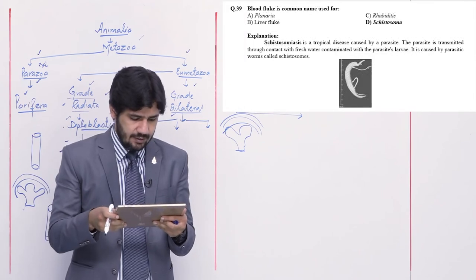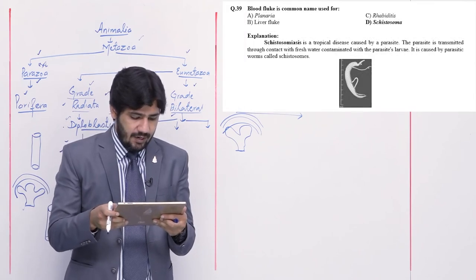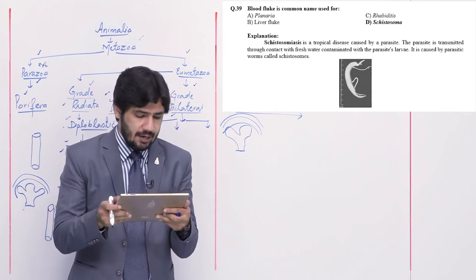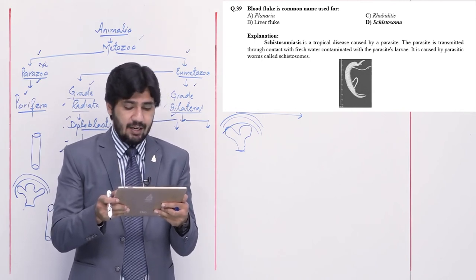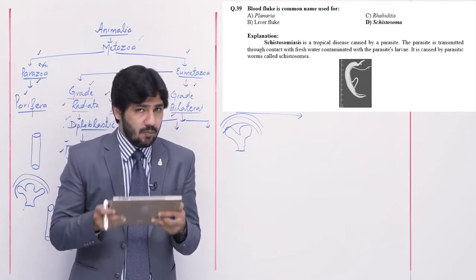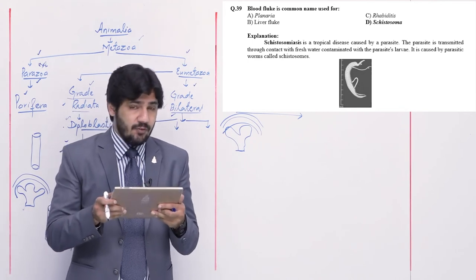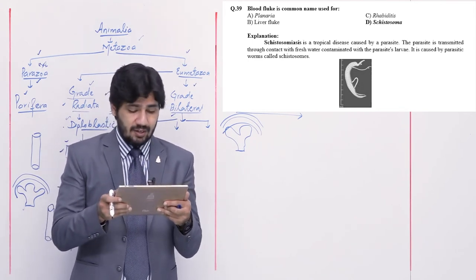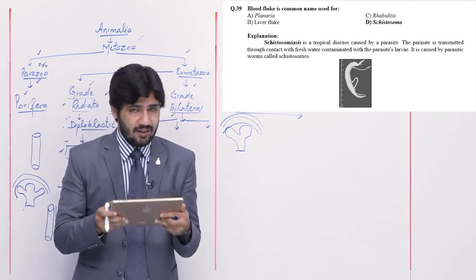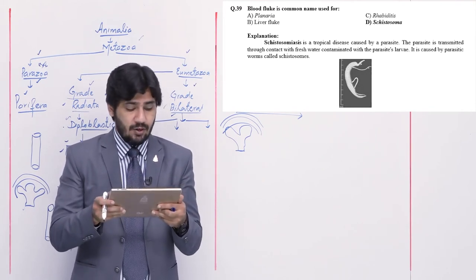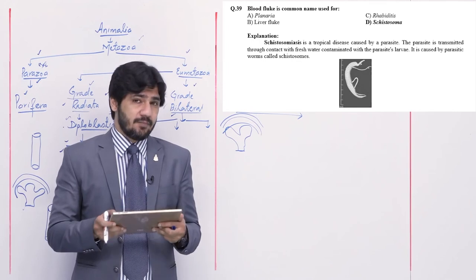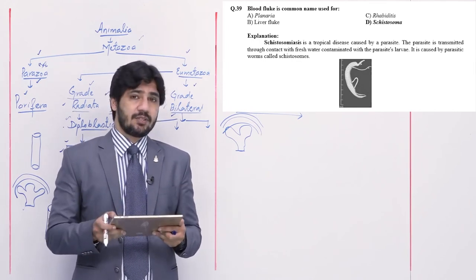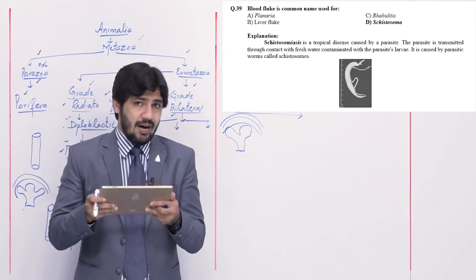Question number 39: blood fluke is the common name used for — alpha Planaria, beta liver fluke, charlie Rhabditis, or delta Schistosoma. Blood fluke is the common name for Schistosoma — a parasite of blood. Planaria's common scientific name is Dugesia. Liver fluke is Fasciola hepatica. Right option is delta.